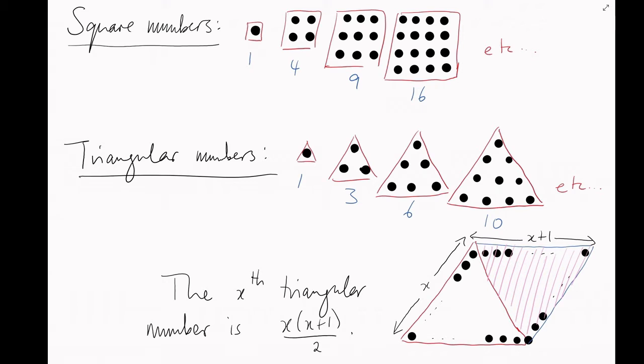And of course, the y-th square number, the number of dots in a square of side length y, is just y squared.